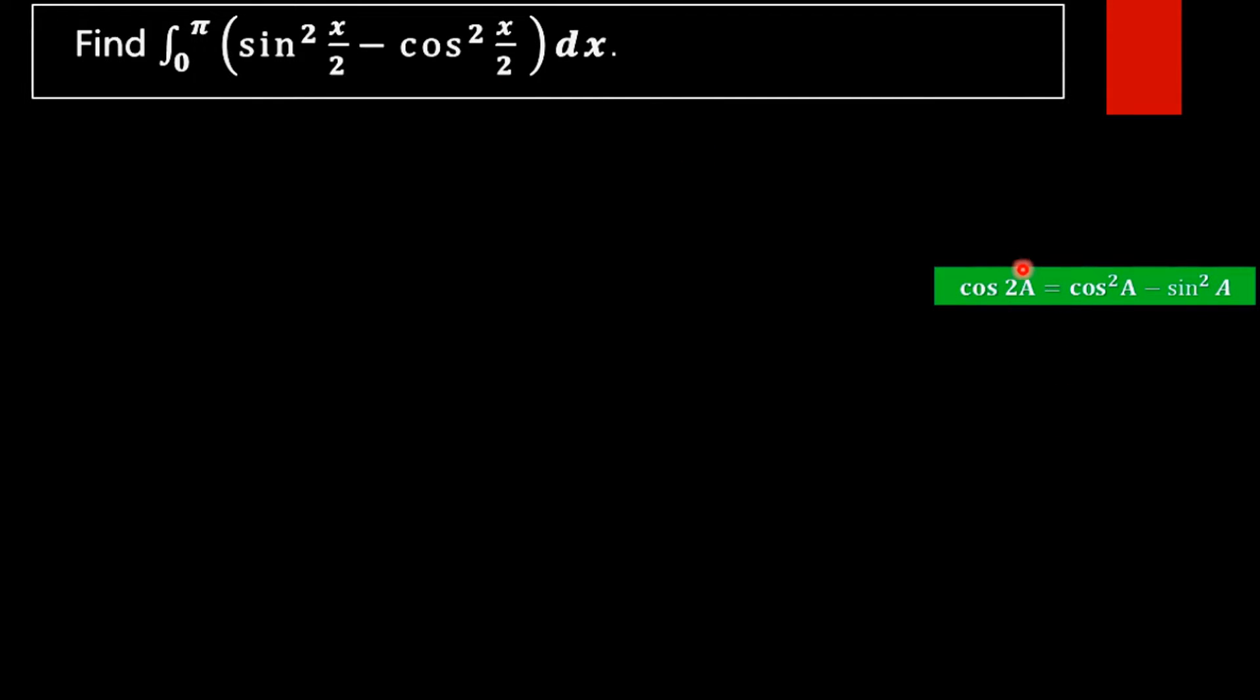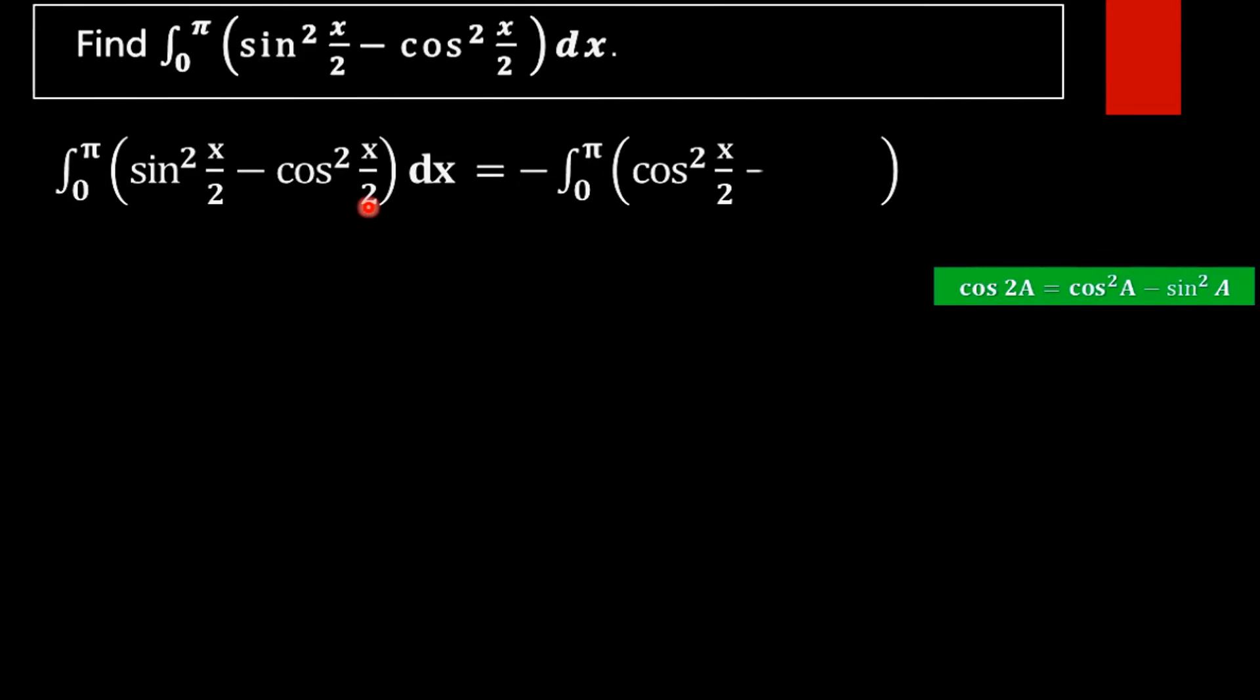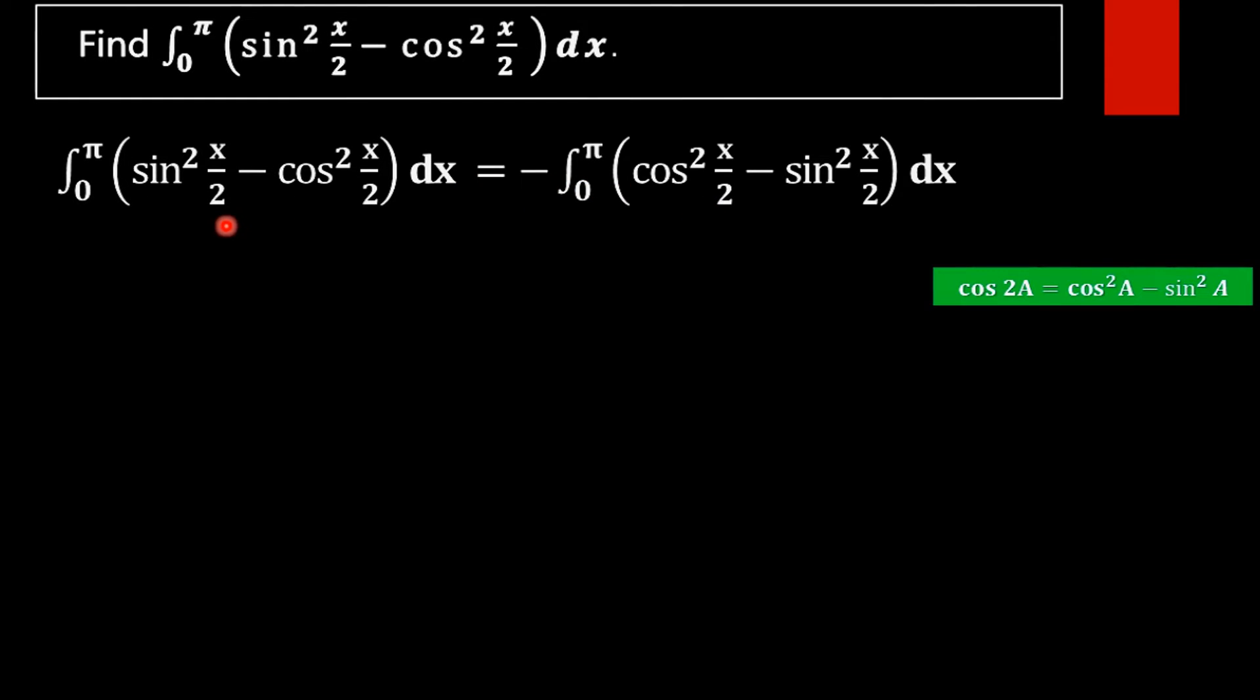So we are using this identity, that is, cos 2a equal to cos square a minus sin square a to solve this problem. That is, we are rewriting it for sin square x by 2 minus cos square x by 2 in the form of cos square a minus sin square a in order to apply this identity. That is, taking minus outside, we will get cos square x by 2. This minus will become plus and here plus will become minus.